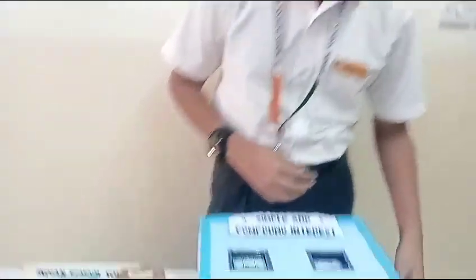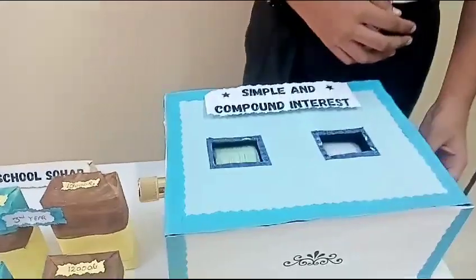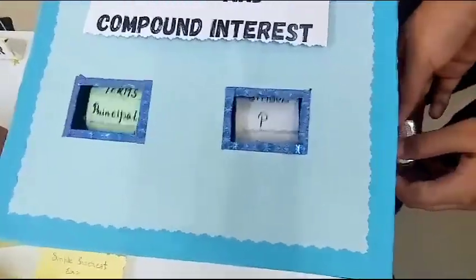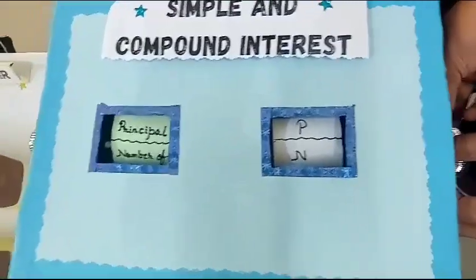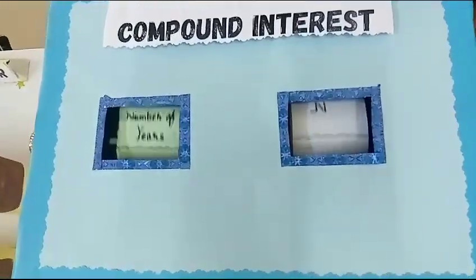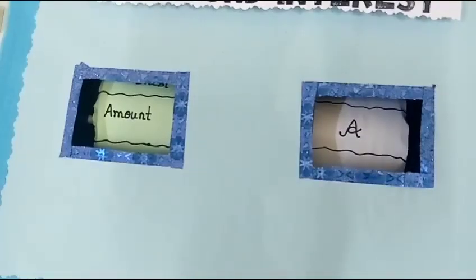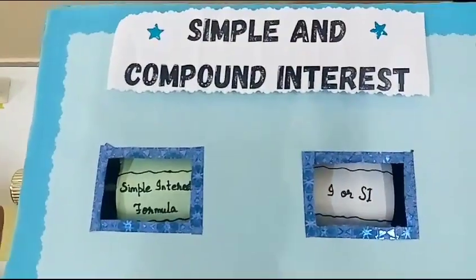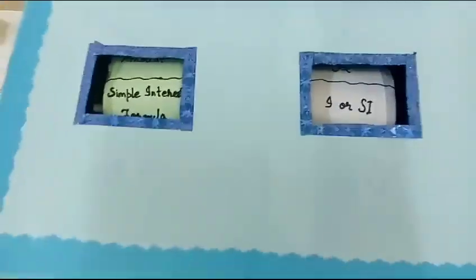Only two formulas are sufficient to solve any problem of Simple Interest. Terms and Symbols: Principal (P) means the total amount given to someone. N is the number of years. R is the rate of interest. A is the amount, which equals Principal plus Simple Interest. SI stands for Simple Interest.